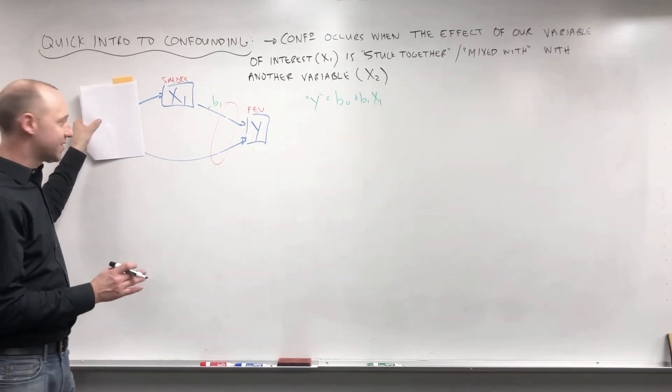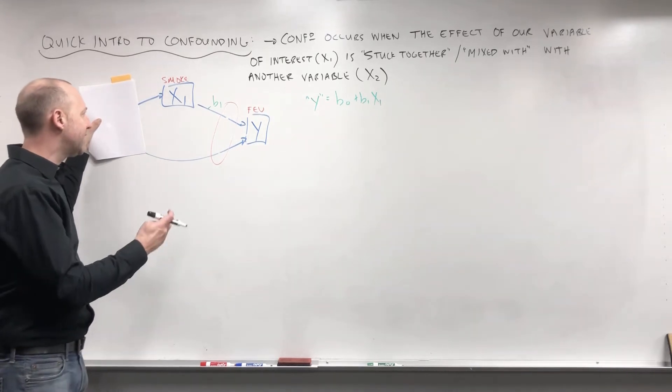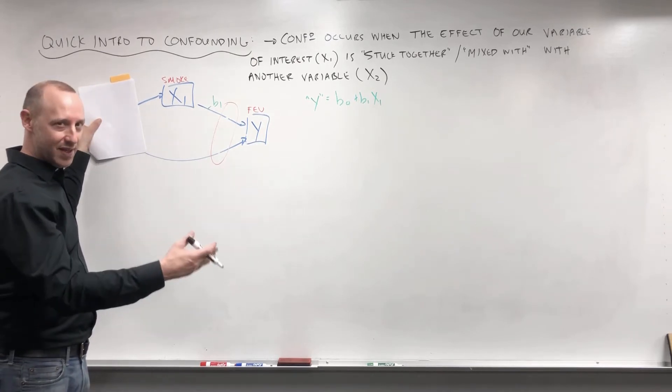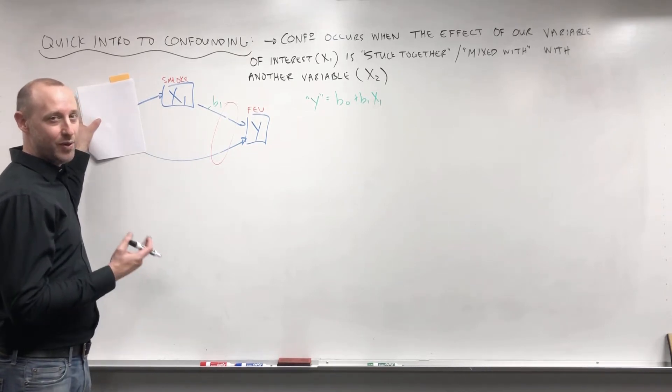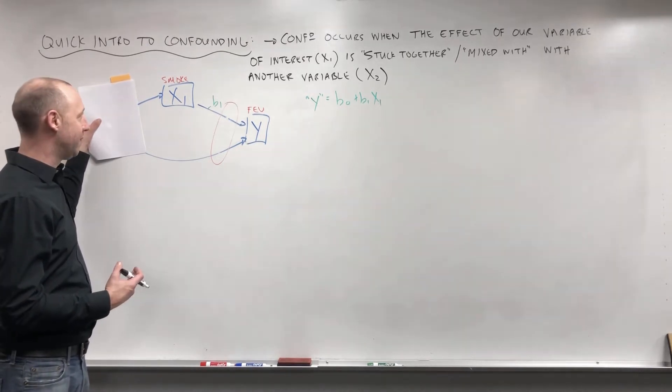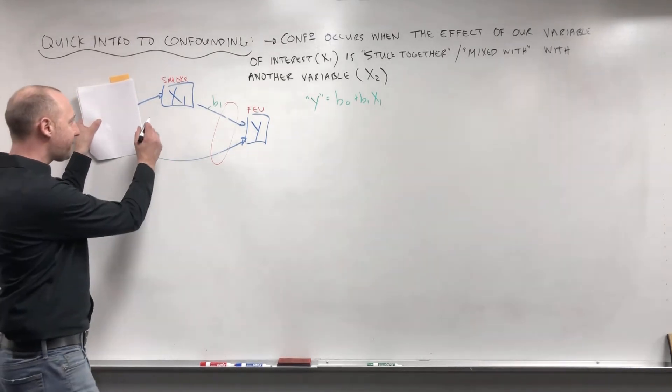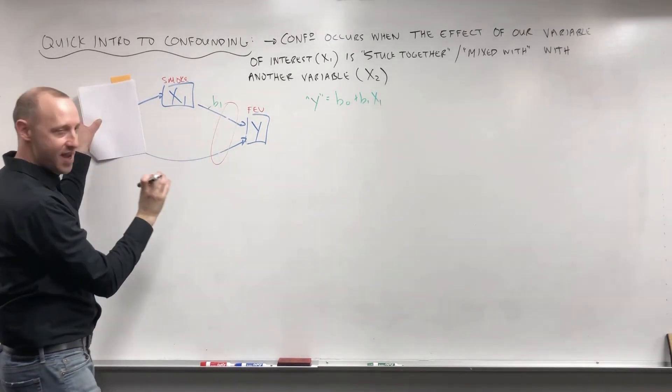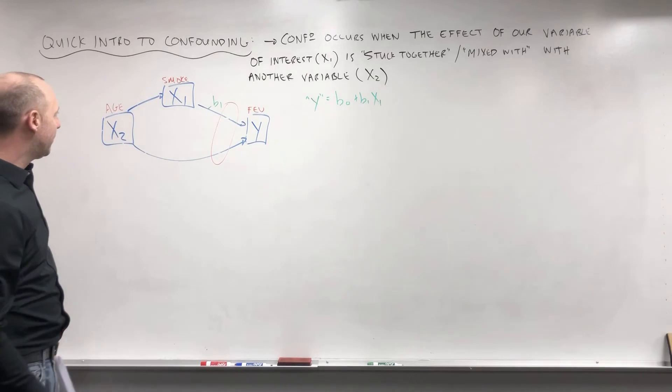What we've already discovered for this data set is that these smokers are older on average than the non-smokers. This data set is kids ranging from 3 to 19 years old, so the three, four, five, six, seven, eight year olds—none of those are smokers, and so the non-smokers on average are younger. And what do we notice? Younger kids have smaller bodies, smaller lung capacities. Older kids have bigger bodies, bigger lung capacities. The smokers are older on average, so the effect of smoking and the effect of age are going to be a bit stuck together if we don't include age in the model.